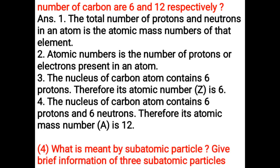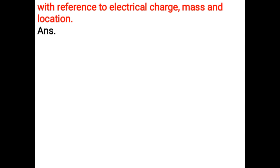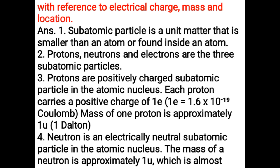What is meant by a subatomic particle? Give brief information on three subatomic particles with reference to electrical charge, mass, and location. A subatomic particle is a unit of matter that is smaller than an atom or found inside an atom. Protons, neutrons, and electrons are the three subatomic particles.